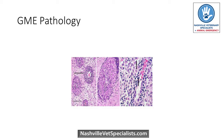GME primarily affects the white matter of the brain and can affect the spinal cord as well. On histopathology, we see cuffs of inflammatory cells forming granulomas, mainly around vessels. It's not known whether these inflammatory cells migrate from elsewhere or represent local proliferation of cells already present in the brain.